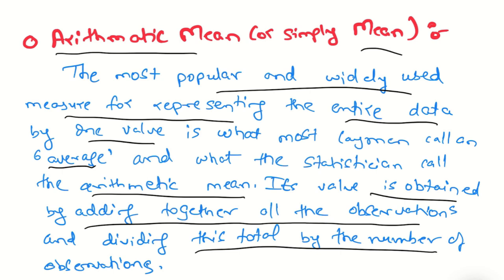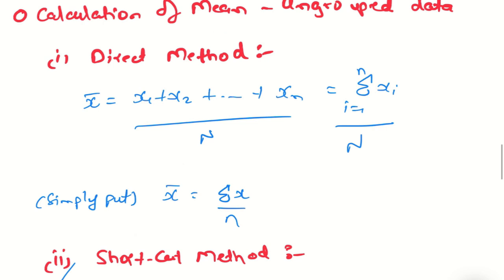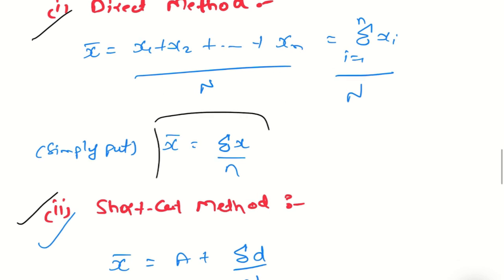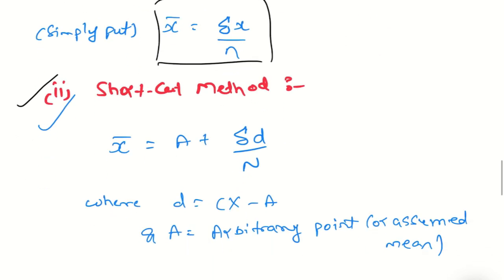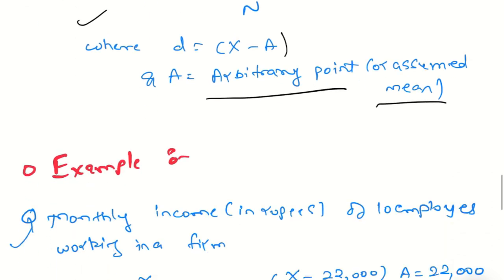For example, if we have 10 employees' salaries, we add all the salaries and divide by 10, the number of observations. This is our arithmetic mean. Calculation of mean for ungrouped data uses the direct method: x-bar equals sigma x divided by n. There's also a shortcut method: x-bar equals a plus sigma d upon n, where d equals x minus a, and a is the arbitrary point or assumed mean.